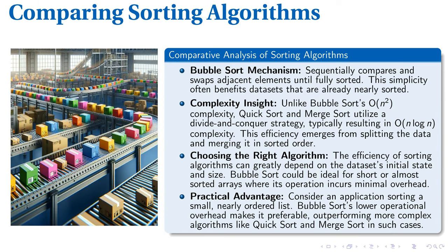Data sorting holds key insights for practical applications. Bubble sort, which sequentially compares and swaps adjacent elements, proves to be quite advantageous for almost sorted or short arrays. In a comparative lens, bubble sort has an O(n²) time complexity, while quick sort and merge sort